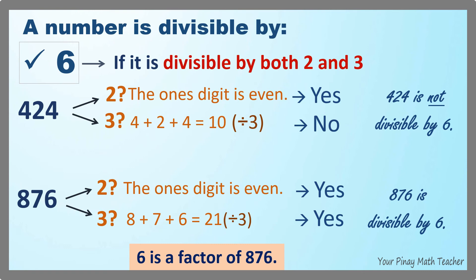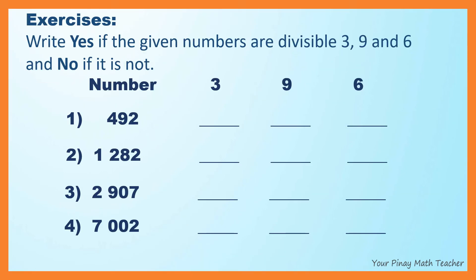So 6 is a factor of 876. For your exercises, write yes if the given numbers are divisible by 3, 9, and 6, and no if it is not. Pause the video if you want to answer these by yourself. These are the answers.